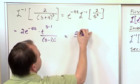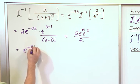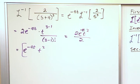e to the minus 4t times t squared. So what I'm going to have is e to the minus 4t times t squared. This is the final answer: e to the minus 4t times t squared.